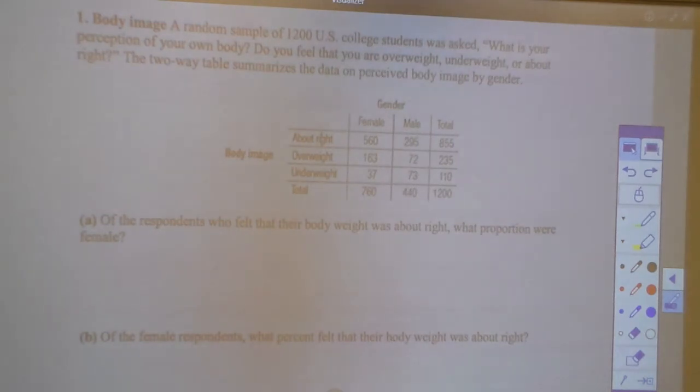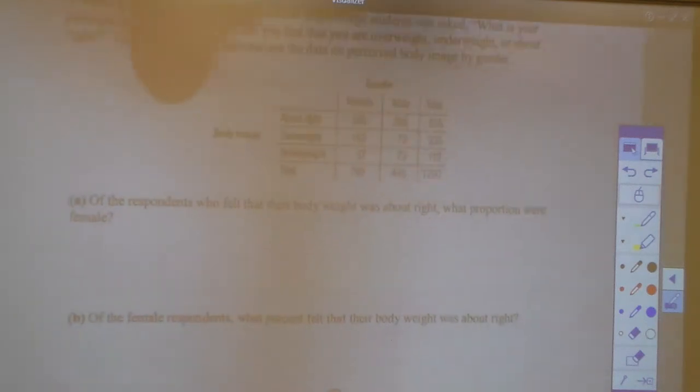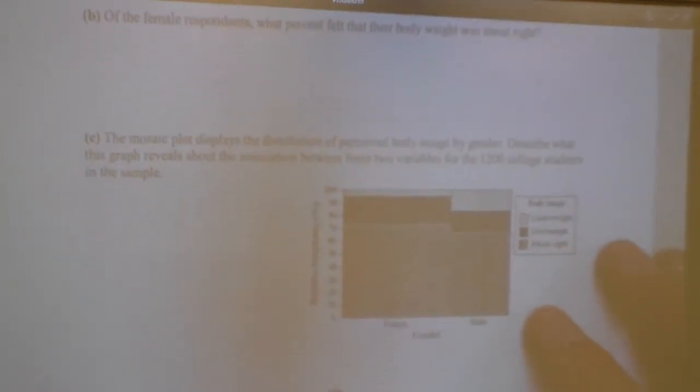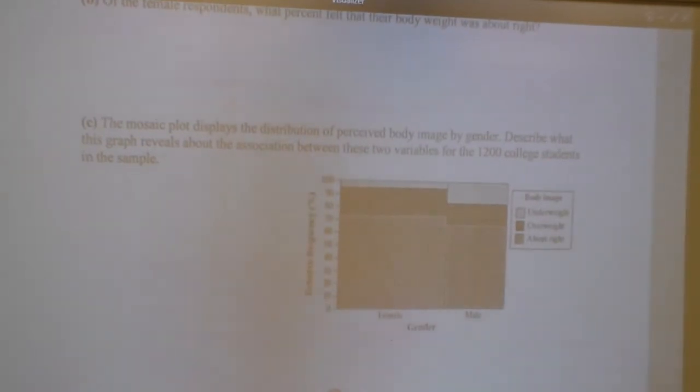So I've got to slide this up. I hope we don't lose the chart. So the next question says, I guess we don't even need to check it. The mosaic plot displays the distribution of perceived body image by gender.